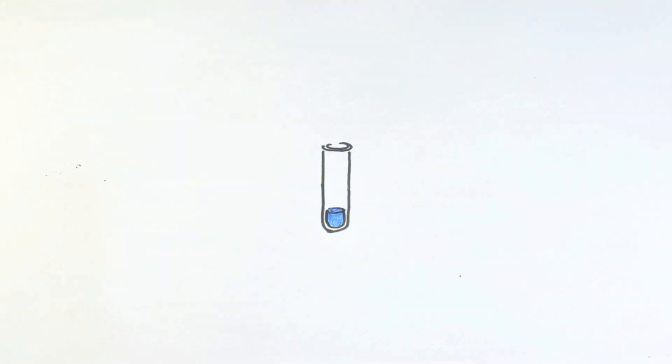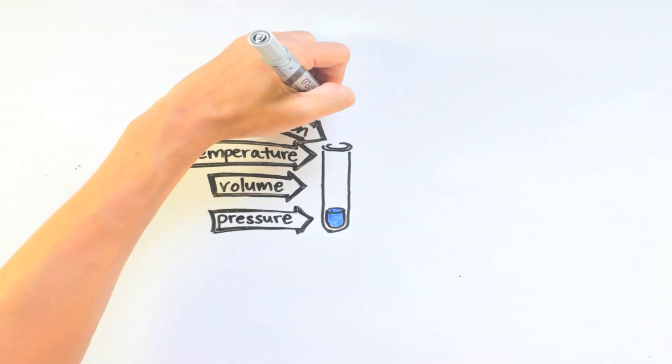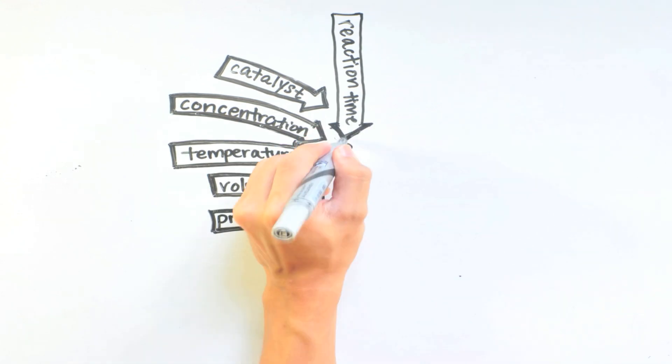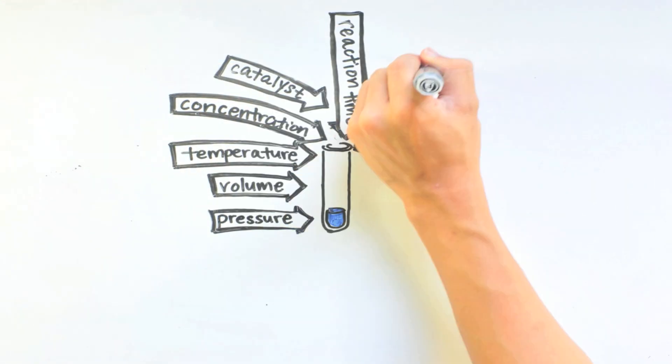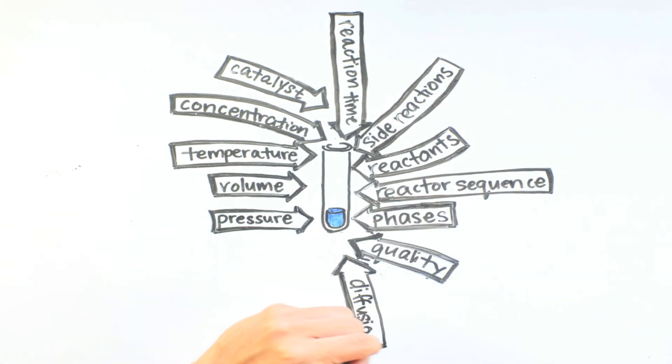In general, any factors related to the production of chemicals, such as temperature, concentration, catalyst, reaction time, side reactions, reactants, and reactor sequence are important to us, chemical engineers.